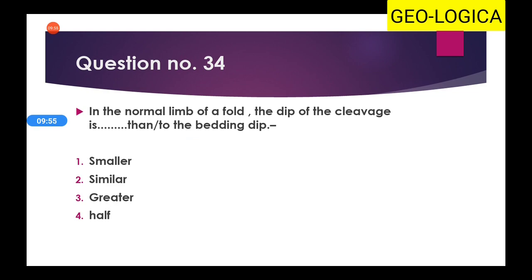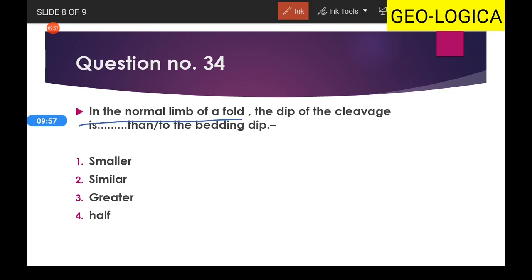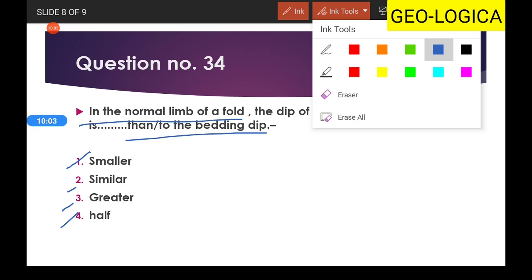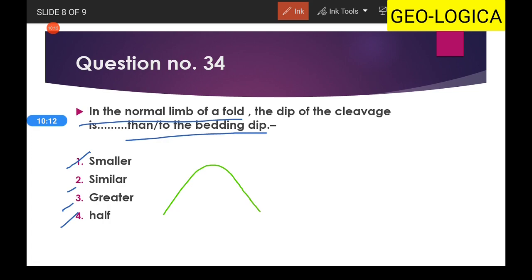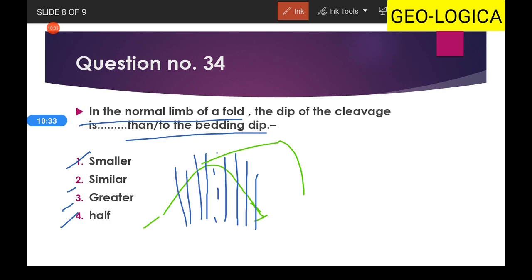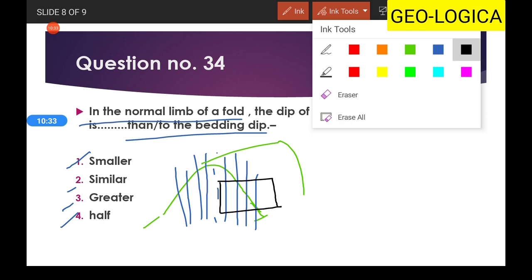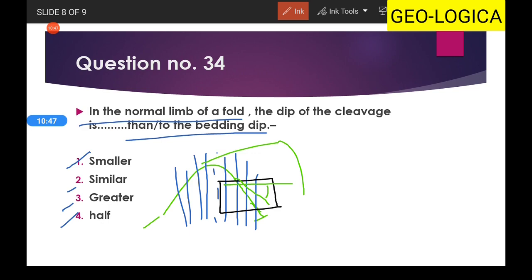Question 34 asks: in a normal limb of a fold, is the dip of cleavage smaller, similar, greater, or half compared to the bedding dip? In any fold, cleavages are always developed parallel to the axial plane. On the normal limb, the limb dips at a lesser angle than the cleavage.